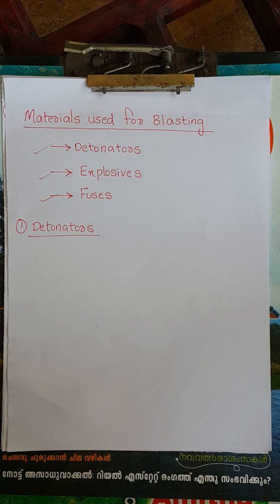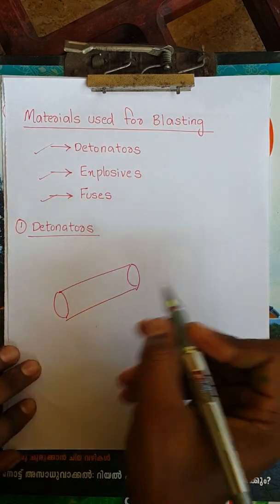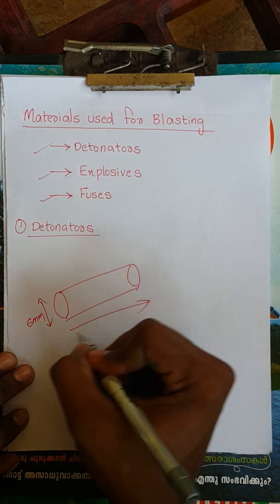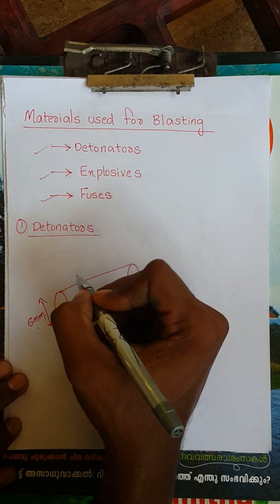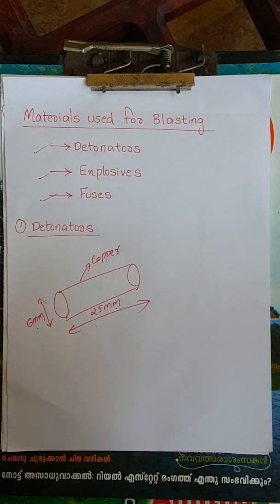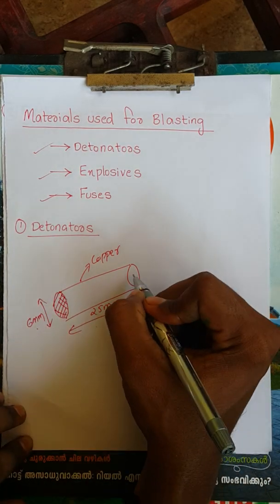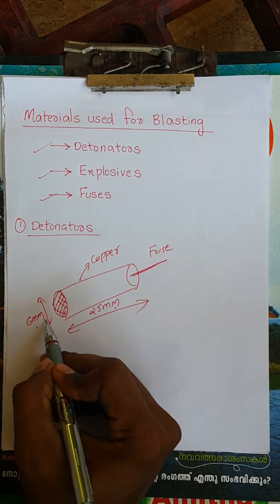First, what is the structure of the detonator? We have a copper cylinder with a diameter of 6mm and a length of 25mm. One side is closed and one side has a fuse.